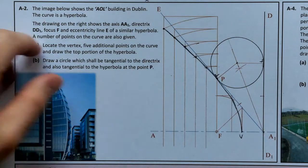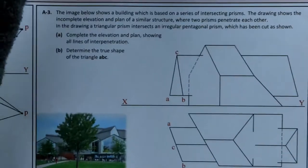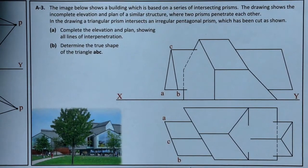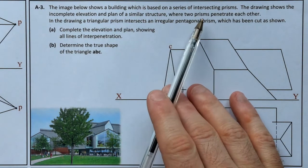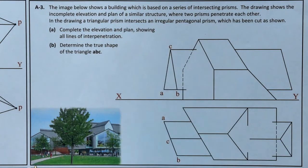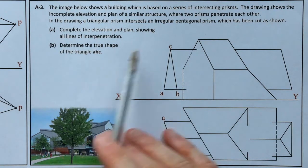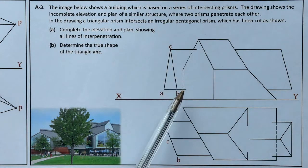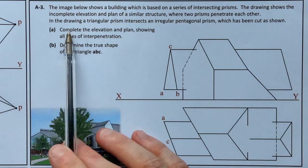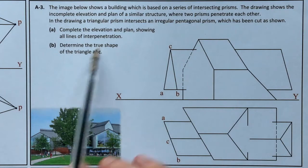We'll move up now to A3. This question involves solids intersecting solids — interpenetration. Question A3 says: the image below shows a building based on a series of intersecting prisms. The drawing shows the incomplete elevation and plan of a similar structure where two prisms penetrate each other — a triangular prism intersects an irregular pentagonal prism, which has been cut as shown. Part A: complete the elevation and plan showing all lines of interpenetration. Part B: determine the true shape of the triangle ABC.